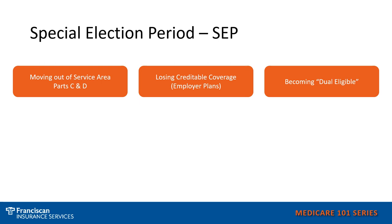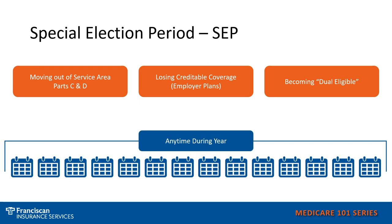The last special election period we will discuss is becoming dual eligible. When you are dual eligible, that means you qualify for both Medicare and Medicaid. When you first qualify for Medicare and Medicaid, you would have a special election period to switch plans into a Medicare-Medicaid plan, or maybe another Medicare Advantage plan or prescription drug plan. If you are dual eligible, you actually have a special election period every quarter of the year except the last quarter, because then you would be in the annual enrollment period. These special election periods, depending on your situation, could be any time of the year — they do not have a set time frame and could happen at any time.